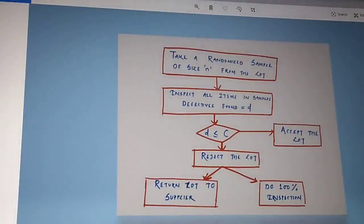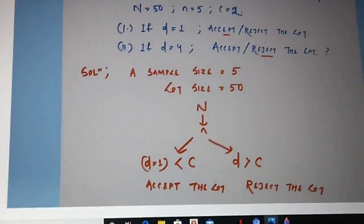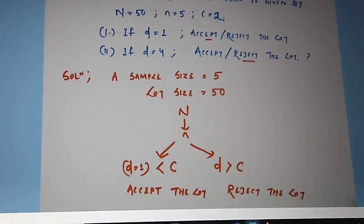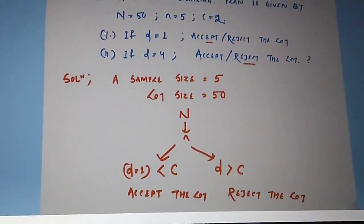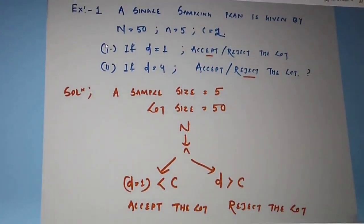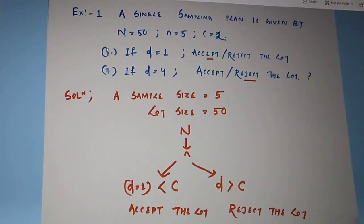Let us understand this with an example. A single sampling plan is given by: capital N equals 50, small n equals 5, and C equals 2. In the first part, if d equals 1, determine whether to accept or reject the lot. In the second part, if d equals 4, determine whether to accept or reject the lot.